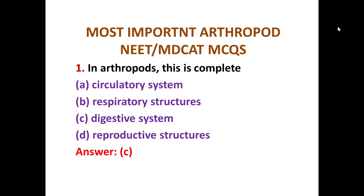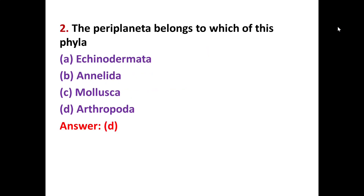The second MCQ is about Periplaneta — which phylum does it belong to? Periplaneta is a genus, and it is found in Phylum Arthropoda. So option D is correct here.